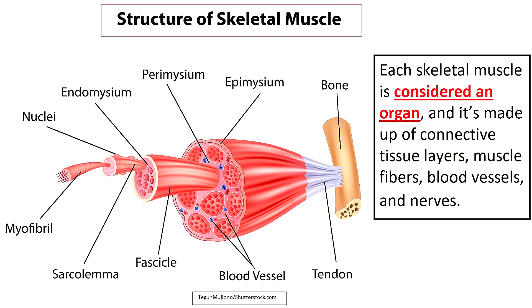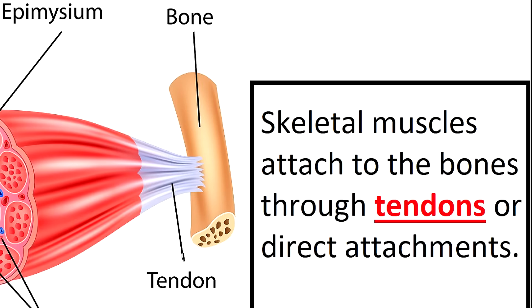Each skeletal muscle is considered an organ and it's made up of connective tissue layers, muscle fibers, blood vessels, and nerves. Skeletal muscles attach to the bones through tendons or through a direct attachment.